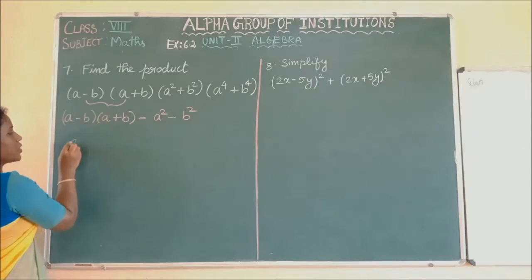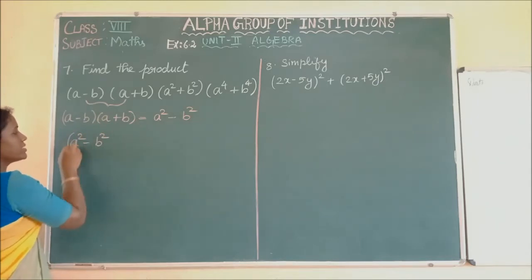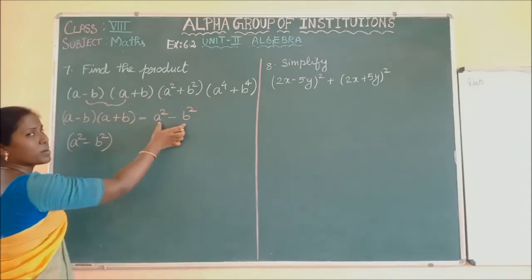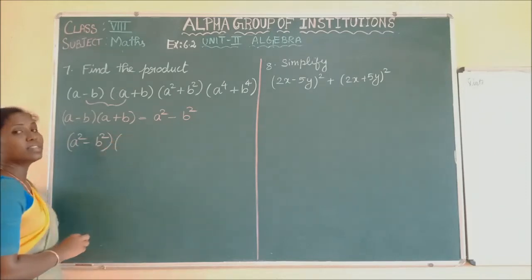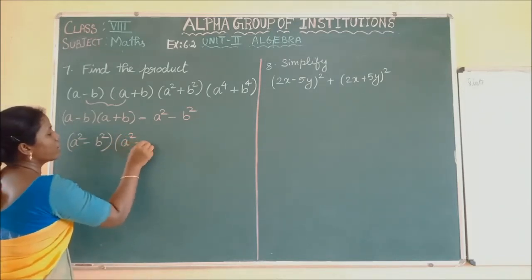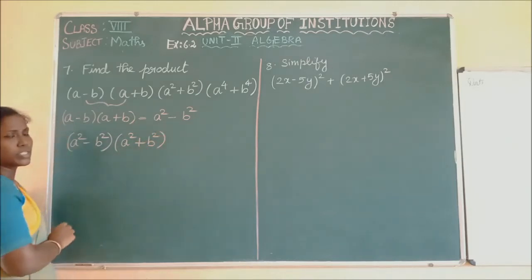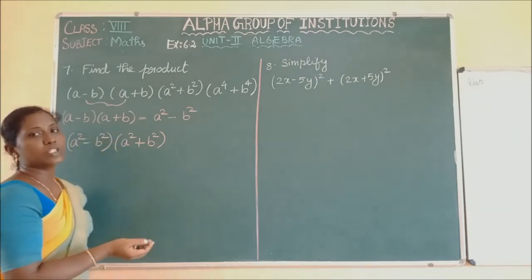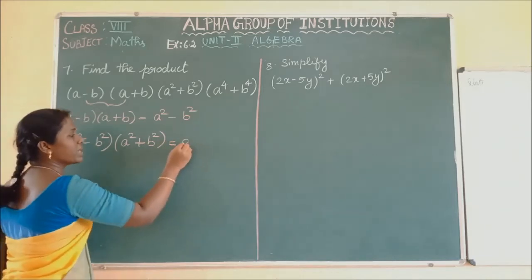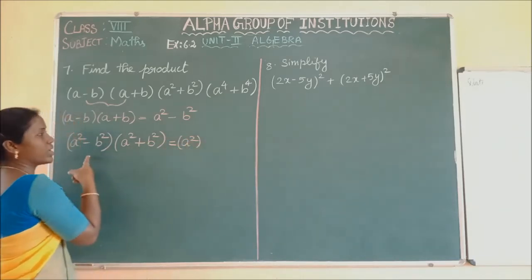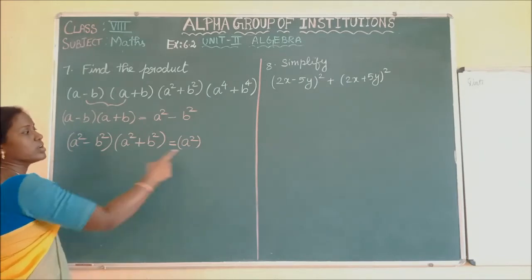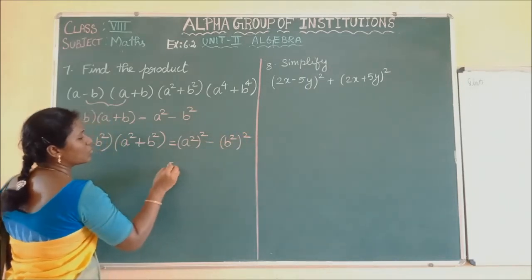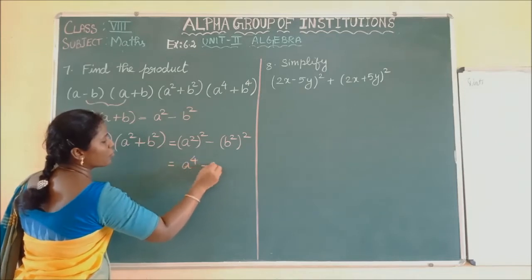So replacing the first two terms by A square minus B square, we now multiply with the third term A square plus B square. This is again in the form of A plus B into A minus B, where A is replaced by A square and B is replaced by B square. Using the identity, the product becomes A square whole square minus B square whole square, which equals A power 4 minus B power 4.